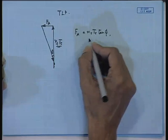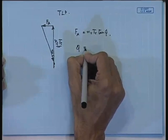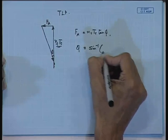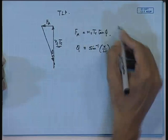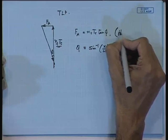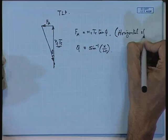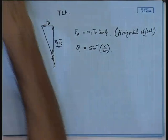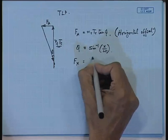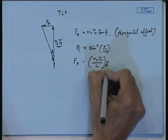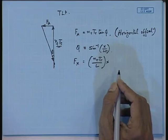This phi you have already calculated from the previous diagram. It was sin_inverse of x by L_T. So, you can calculate phi. From this tan(phi) you can get the horizontal offset force. Now, offset: this angle phi is of the order of say 5 degrees. So, you can approximate this into F_x = (N_T / (T_T * L)) * x, since tan(phi) and sin(phi) are more or less the same.